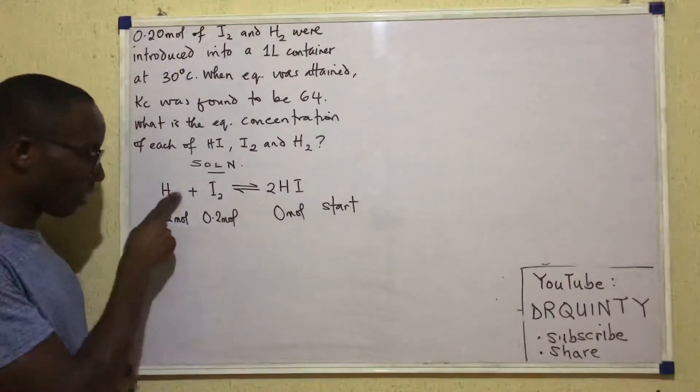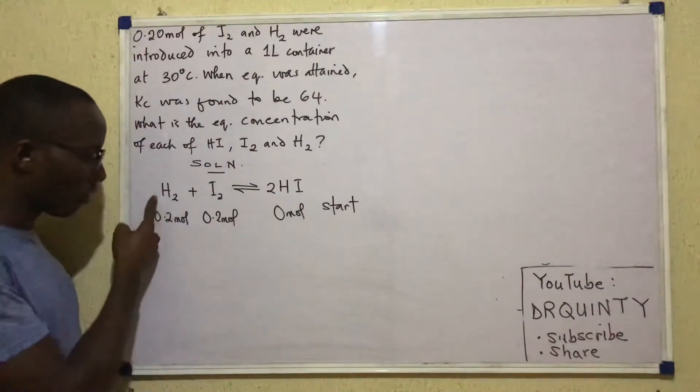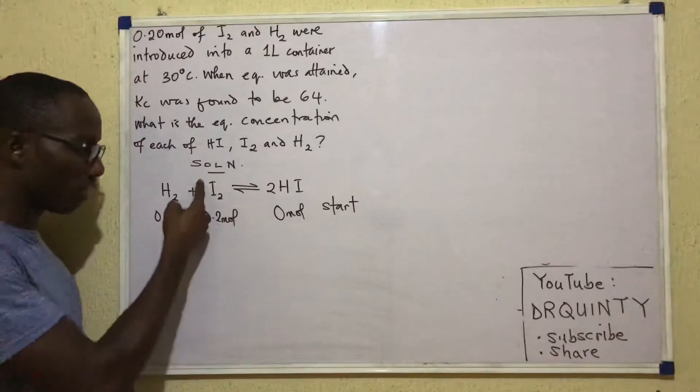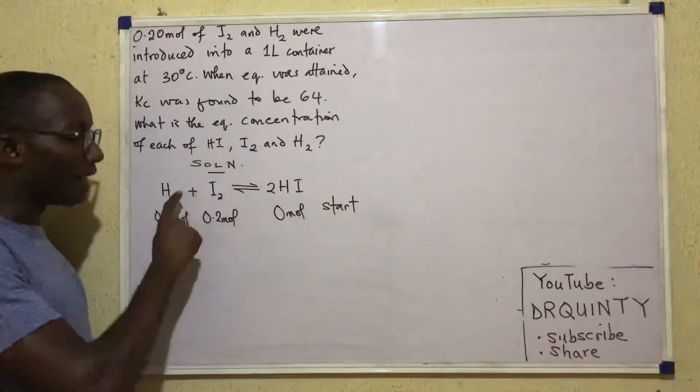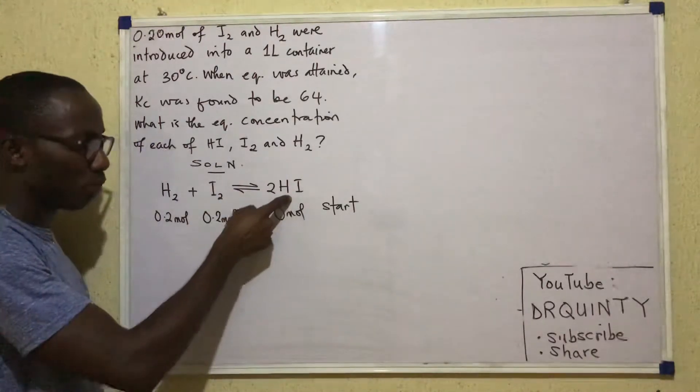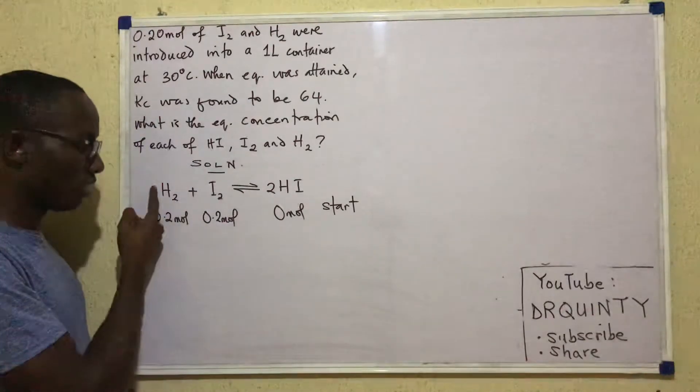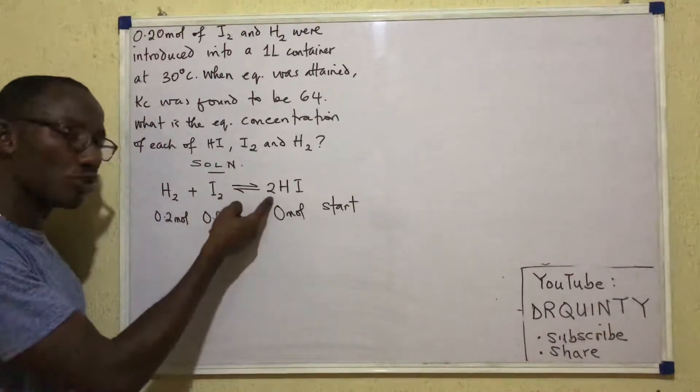we know from this stoichiometry here that the quantity of H used up would be the quantity of I2 used up. And the quantity of HI produced would be twice the quantity of any of these because it's one ratio one ratio two.